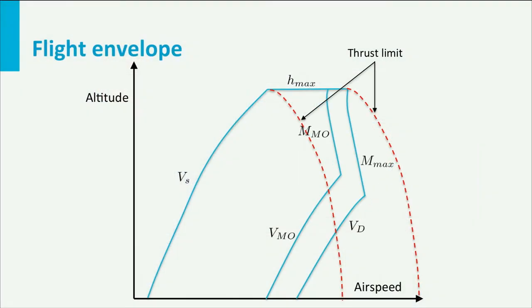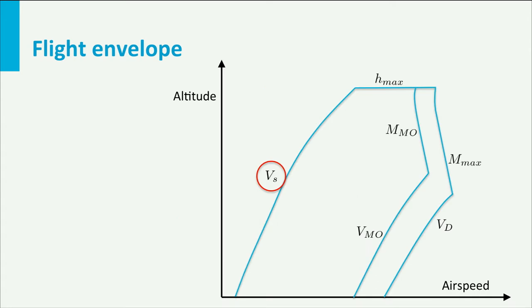Let's start with the stall speed of the aircraft. As you can see, it increases with altitude. Furthermore, this limit is dependent on the aircraft's weight. In equilibrium, lift should equal weight and from that we can derive the equation for the minimum airspeed. A larger weight results in a higher stall speed. So the worst case stall speed occurs at maximum aircraft weight.